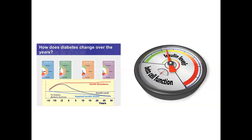In doing so, the beta cells of the pancreas work very hard and slowly and gradually become exhausted, and insulin secretion reduces further. When insulin levels are enough for body requirements it is at a green state, then amber, and gradually red. When it is red, the pancreas is hardly able to create any insulin, and the patient needs exogenous insulin support to tackle the hyperglycemia.